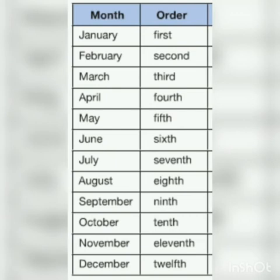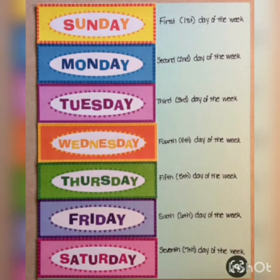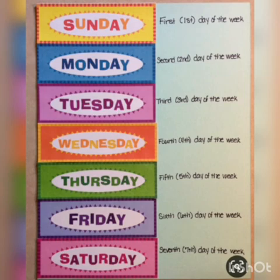Now let us also learn the days of the week by using ordinal numbers. Sunday is the first day of the week, Monday is the second day of the week, Tuesday is the third day of the week, and Wednesday is the fourth day of the week.